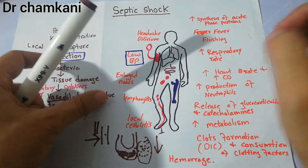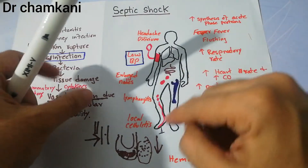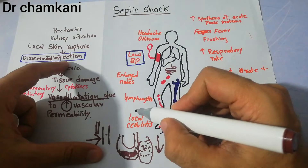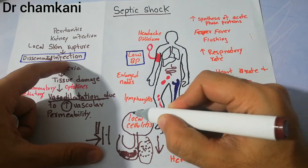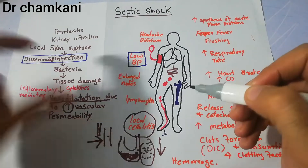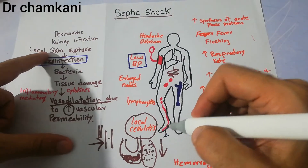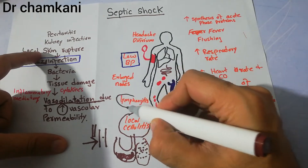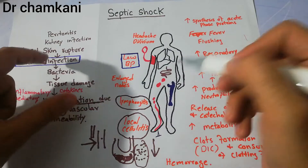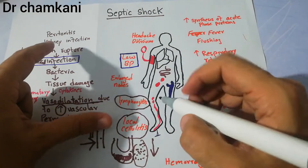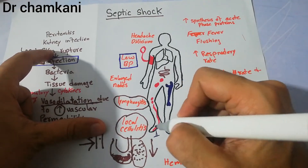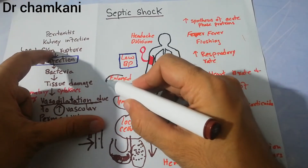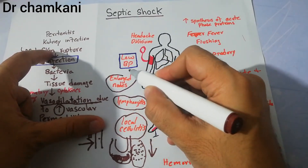Starting from the local injury — such as a nail wound — local cellulitis can occur at that point. This infection can spread through the lymph nodes and cause infection of the lymphatic vessels, called lymphangitis. The infection can also go into different lymph nodes and cause enlarged lymph nodes, or lymphadenopathy.